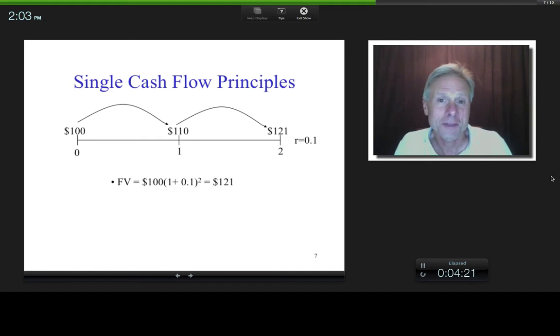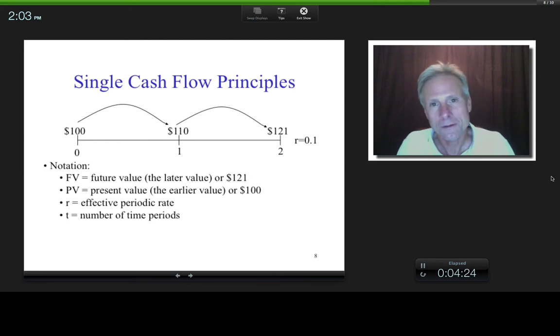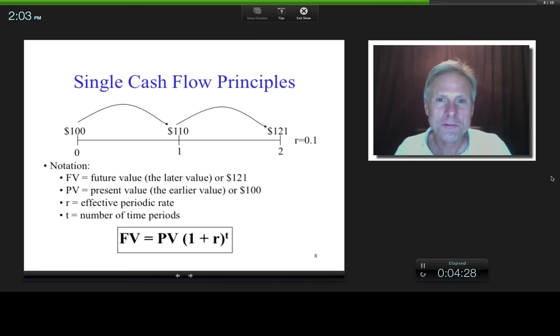So at this point, if we add in some notation, we've got enough information to figure out the only single cash flow formula that exists. Okay, so in this example, my future value, that's a relative term, it's a later value relative to an earlier value. And so the present value is the earlier value. Now, does the present value have to be today? No, it can be anything you want, but it's relative in the context of this formula. So if the $121 is a later value, then the $110 is an earlier value, or the $100 is an earlier value. So it depends what you're starting with.